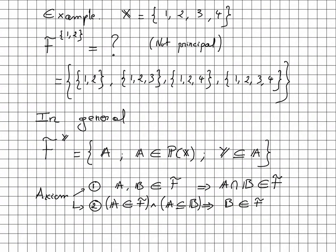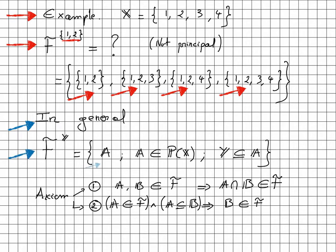Another example: with X = {1, 2, 3, 4} and the filter generated by the set {1, 2}. This is not a principal filter — a filter is said to be principal when it is generated by a one-element set only, and here we have two elements. So the filter must include {1, 2} and also {1,2,3}, {1,2,4}, and {1,2,3,4}. In general, the filter generated by the set Y can be written F(Y) and is the collection of sets A in the power set such that Y is a subset of A. We can verify that both filter axioms are satisfied by this definition.